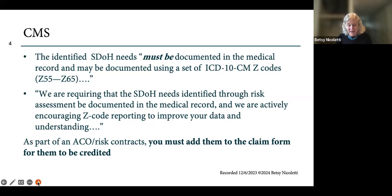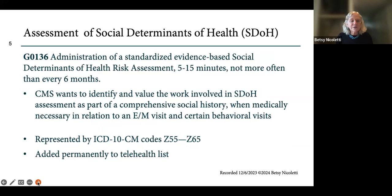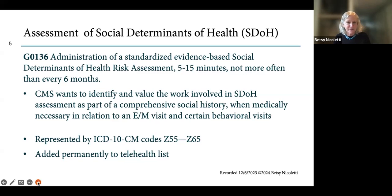Now, if you're part of an ACO or you have a risk adjustment contract, you must add them to the claim form in order for anybody to know about them or credit them. Here's the HCPCS code: G0136 — administration of a standardized, evidence-based social determinants of health risk assessment, five to fifteen minutes, not more than every six months.